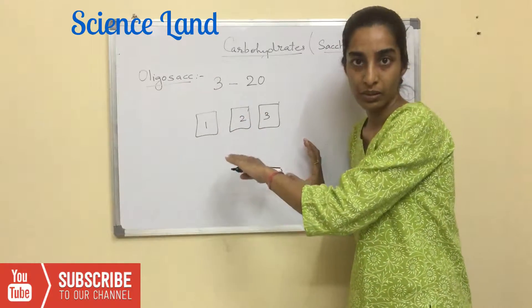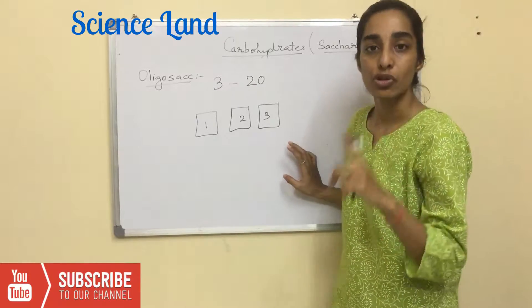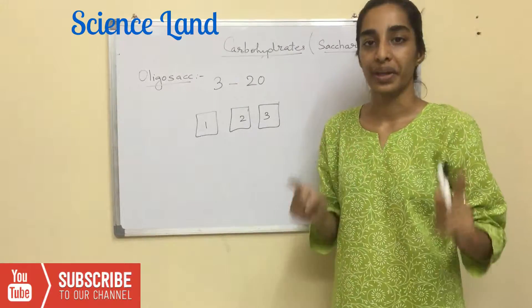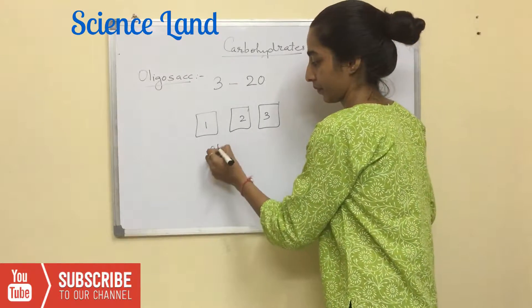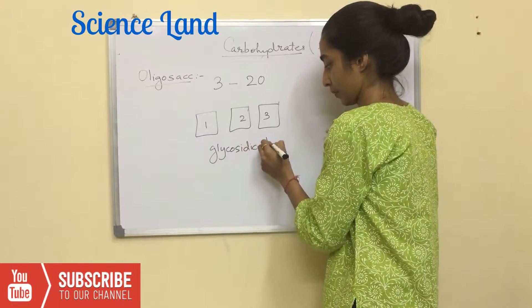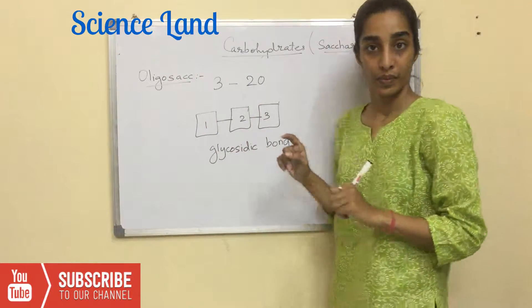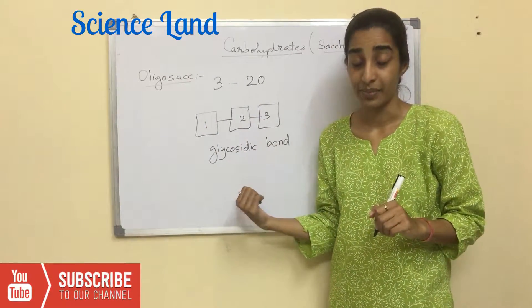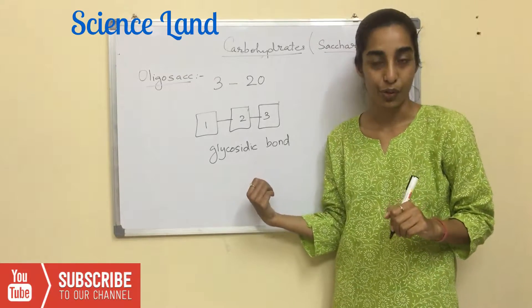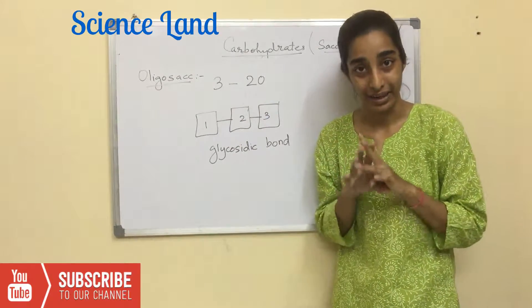These monosaccharide units are joined together by a bond which is known as glycosidic bond. You need to remember this. It's important to know what kind of bond joins these monosaccharide units.